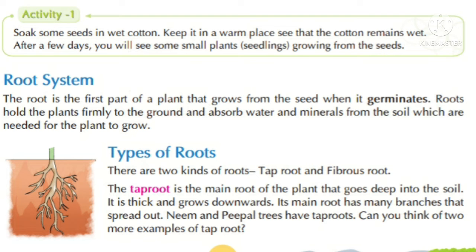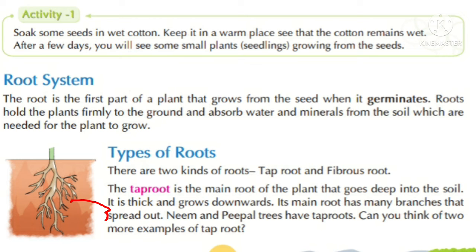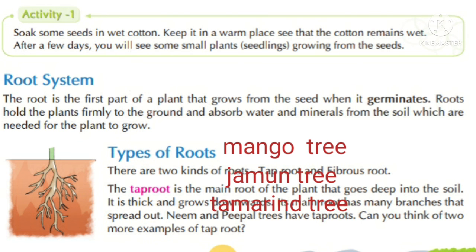Root do prakar ke hote hain: tap root aur fibrous root. Tap root plant ka main root hota hai, jo ki zameen ke andar niche gehre tak jata hai, ya mota hota hai aur niche grow karta hai. Iske main root se bahut saare branches nikalte hain, jo bahar ki taraf failey huye dikhti hain. Neem aur peepal jo hai tap root ka example hai. Usi tarah se mango, jamun tree, tamarind tree, yeh sare bhi tap root ke examples hain.